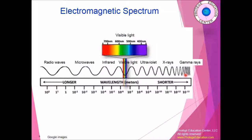If you do the same thing for gamma rays, the wavelength is very short. So if you count how many waves pass through one point per second, you'll see there are more waves, meaning a higher frequency. Because the frequency is higher, the energy is also very high in gamma rays compared to radio waves.